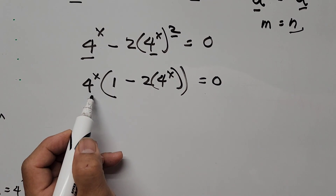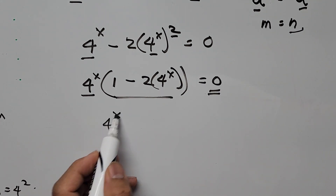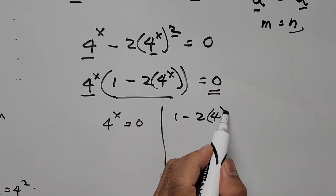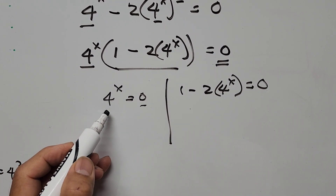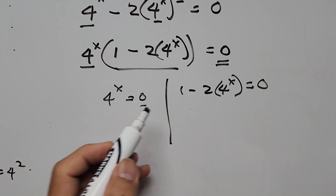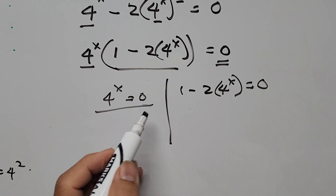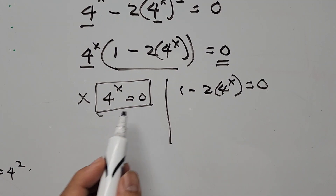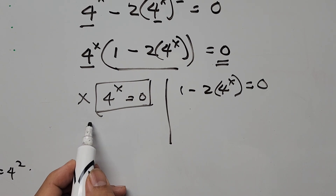From here we equate each factor to 0. For 4 to the power of x equals 0: the left-hand side is always positive and cannot be 0 or negative, so this has no solution — and if we took the logarithm, the logarithm of 0 is undefined. So we discard this solution entirely.